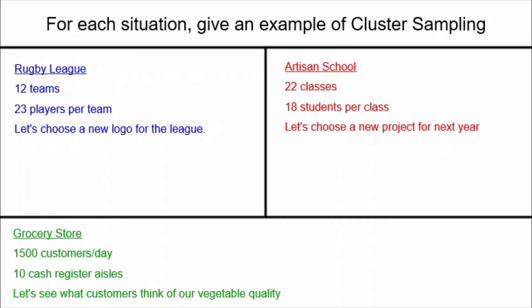Today's Daily Dose of Math is about cluster sampling. This is just one of the methods that we can use to get information from a sample group when we are doing a sample survey. Here I have three situations involving a rugby league, an artisan school, and a grocery store, and for each we are being asked to give an example of cluster sampling.